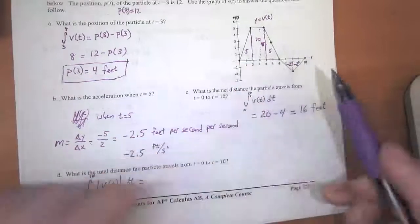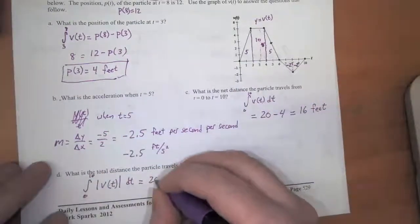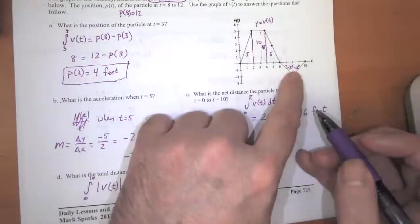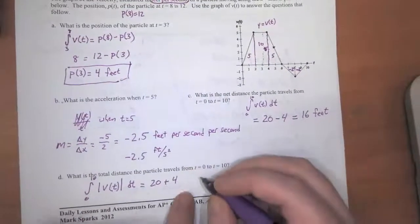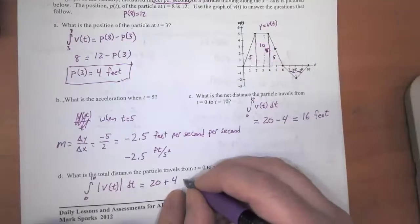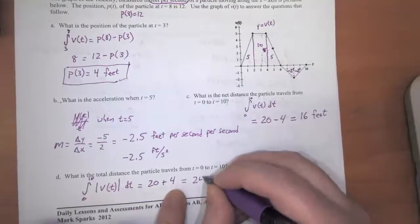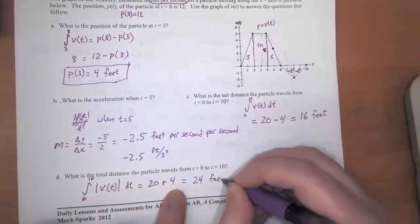So this time, we've got the 20 that it moved to the right, and then it moved four to the left, but we want to say it moved 20 feet and then it moved another four feet. So it moved a total distance of 24 feet.